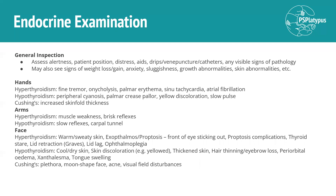Now for the endocrine examination. Always start with general inspection: assess alertness, where the patient is sitting, whether they're in distress, any aids nearby — especially mobility aids — drips, venepuncture, catheters, urine containers, and any visible signs of pathology. Then work more inwards, starting with the hands. In hyperthyroidism you might see a fine tremor, onycholysis, and palmar erythema, as well as sinus tachycardia or atrial fibrillation. In hypothyroidism you might see peripheral cyanosis, palmar crease pallor, yellow discoloration, and a slow pulse due to reduced cardiac output.